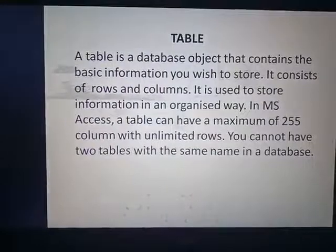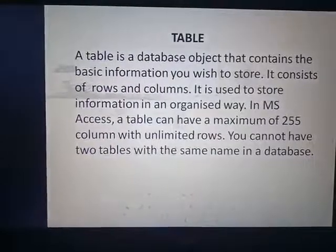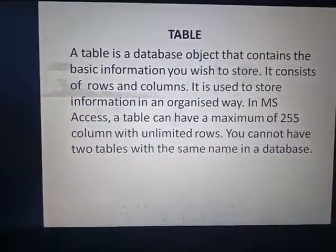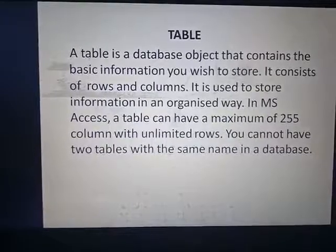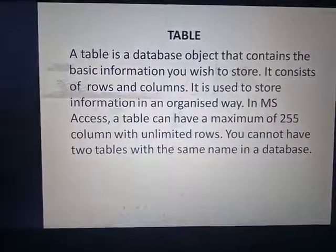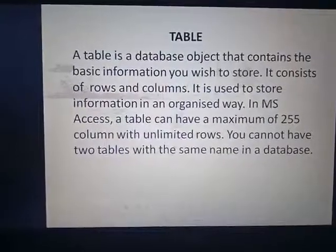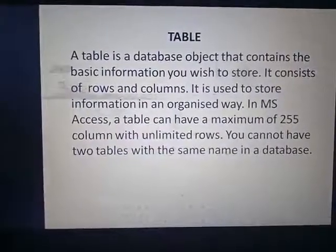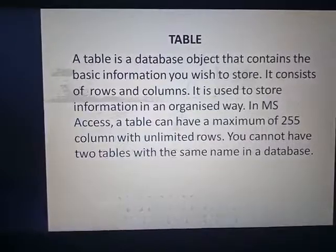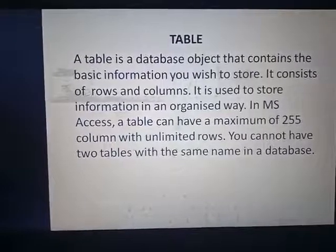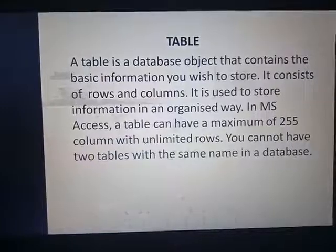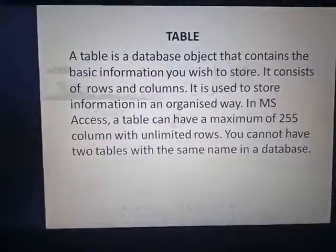A table consists of rows and columns — similarly, a table in MS Access also contains rows and columns. The maximum limit of an MS Access table is 255 columns, and rows are unlimited. The columns have a limit of a maximum of only 255, after which you have to make a new table.